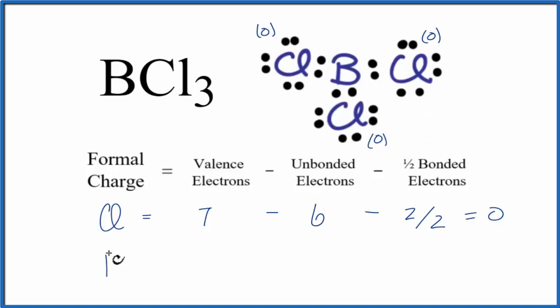For the boron, that's in group 13, sometimes called 3A. That has 3 valence electrons. We'll subtract the unbonded valence electrons. There aren't any. Everything here is involved in a chemical bond. That's 0.